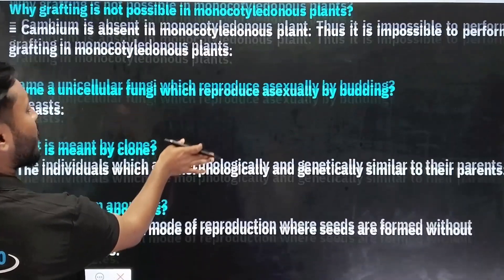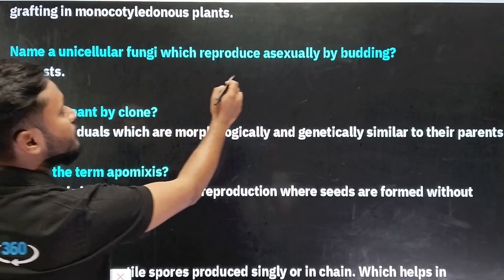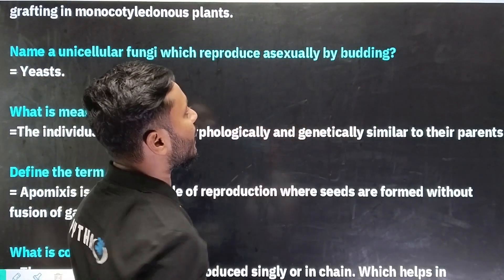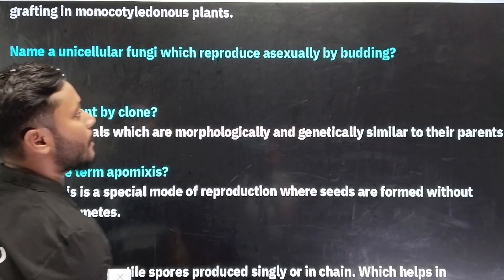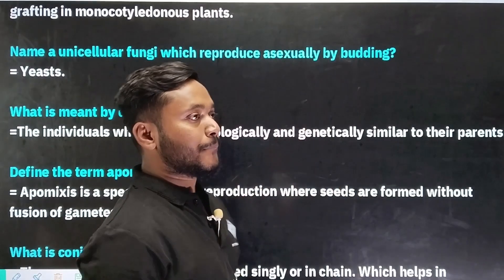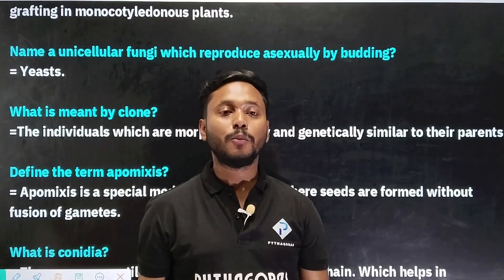Unicellular fungi which reproduce asexually by budding. So, this asexual reproduction is called budding.